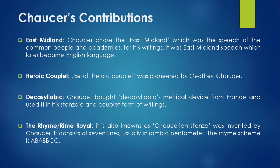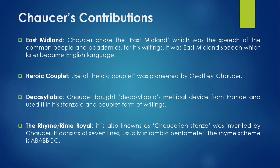Now we will see Chaucer's contributions to English literature. Chaucer is known as the father of English literature. His first major contribution is his use of the East Midland dialect. Chaucer chose East Midland, which was the speech of the common people and academics, for his writings. It was the East Midland speech which later became the English language, as many local languages were spoken at that time.